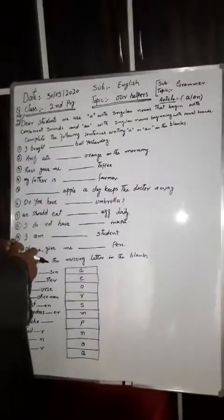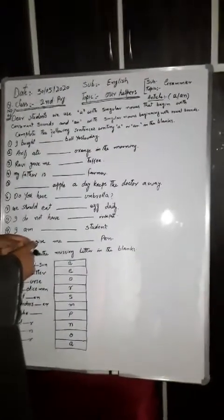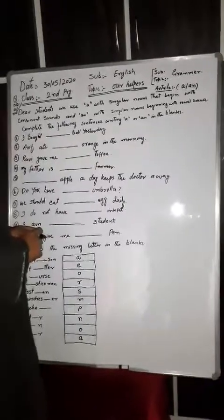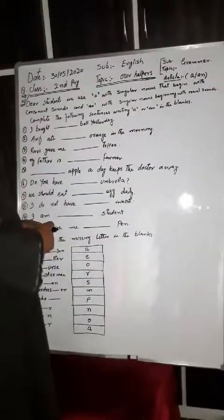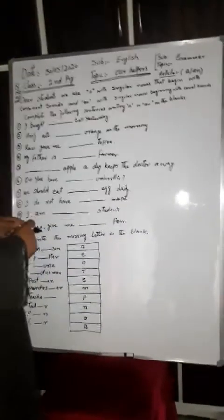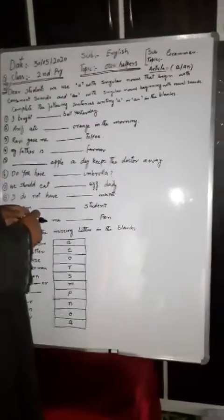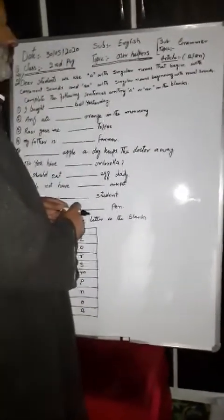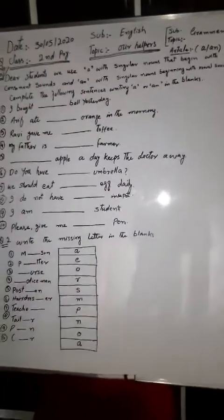This is the marker 'a' with singular nouns. The singular noun. We use 'a' with words that begin with consonant sounds. You must say consonant sound. And we use 'an' with singular nouns, the singular noun beginning with vowel sounds. You must use vowel sound that starts.